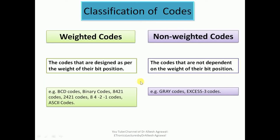We will briefly discuss about the classification of codes according to their weights. The codes are in general classified as weighted codes and non-weighted codes. Weighted codes are the codes that are designed as per the weight of their bit position. Some examples of weighted codes are BCD codes, binary codes, 8421 codes, 2421 codes, and 84-2-1 codes. Non-weighted codes are not dependent on the weight of their bit position, and some standard examples are gray codes and XS3 codes.